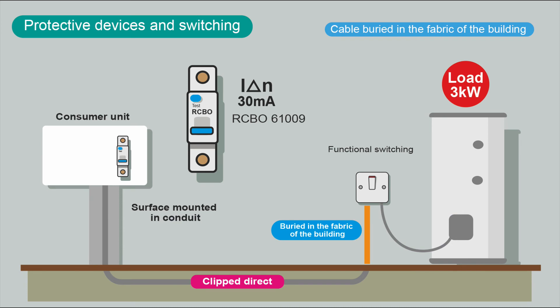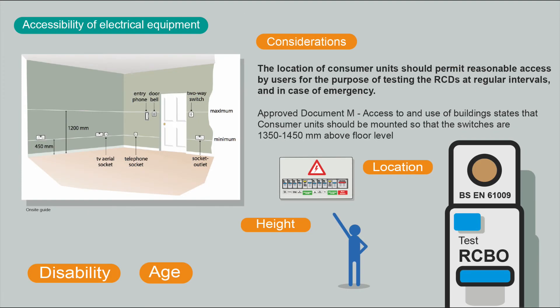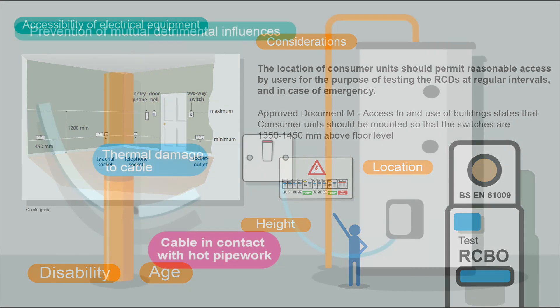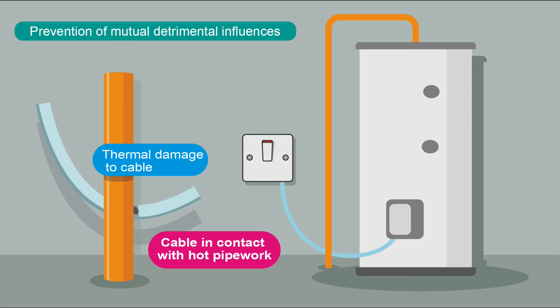We need to calculate the rating of the RCBO, which we'll do during the cable calculations. We also need to consider accessibility to electrical equipment. In domestic installations people need to operate things, switch them on and off, and have access to the consumer unit for emergencies and regular RCD testing — but placed where children can't interfere with it. You've got to consider who's living in the building. Building Regulations Document M gives guidance on the heights of sockets and switches.